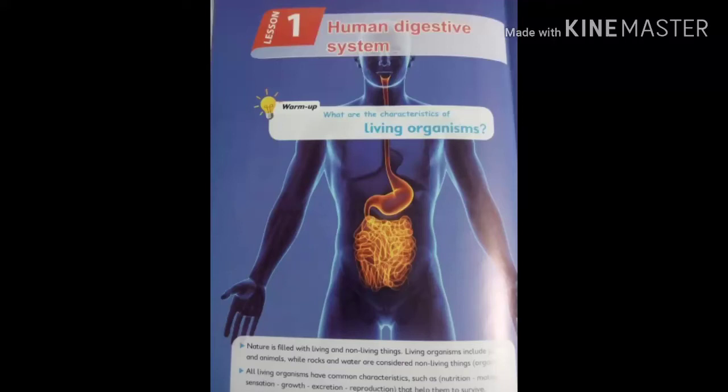Hi guys, today we will study the digestive system. The world is filled with living and non-living things. Living things include plants, animals, and humans, but non-living things are rocks, air, water, and soil. Now we will know the difference between living things and non-living things.